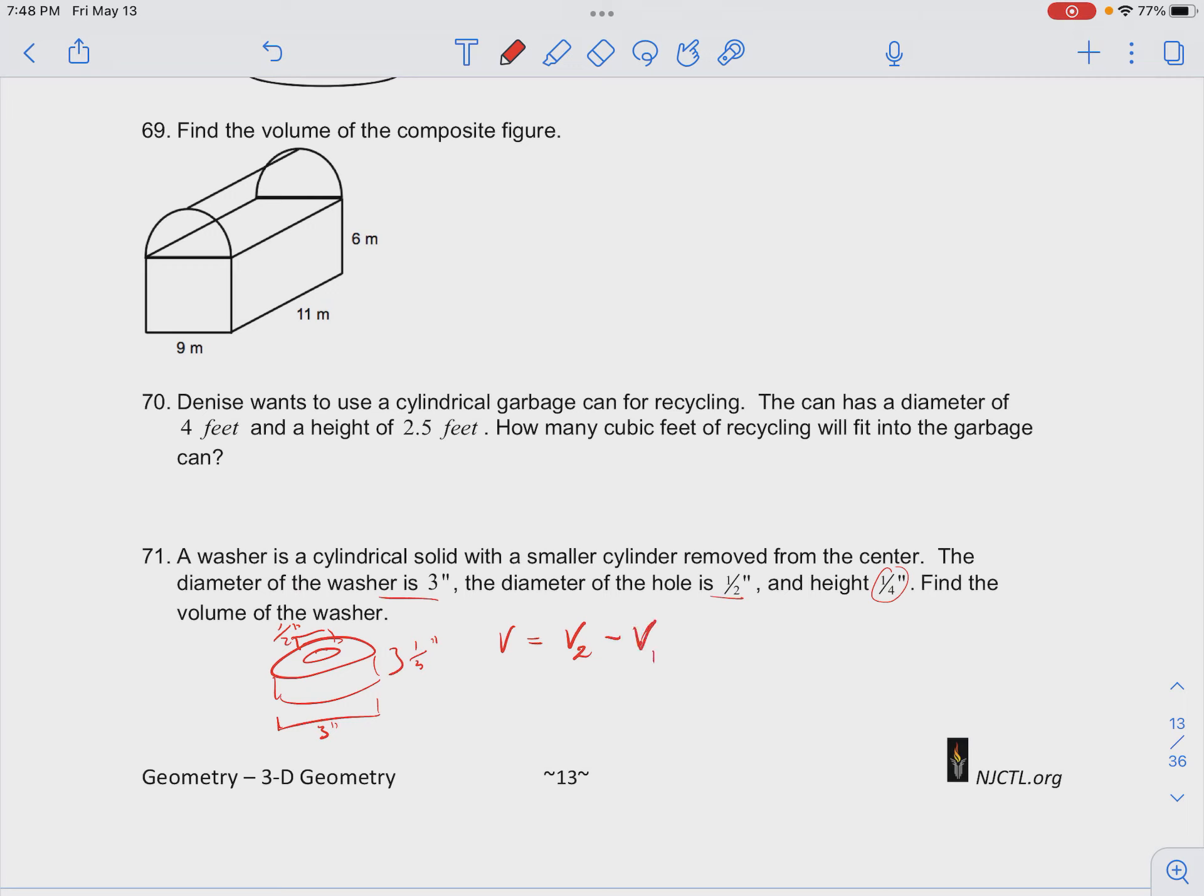We'll call this volume 1. So we have volume 2 is given by the volume of the cylinder is πr₂²h minus the volume of the inner cylinder is going to be πr₁²h. Now since the height of both cylinders is the same, and π is the same, we can pull those out.